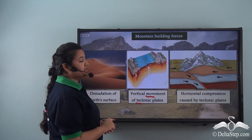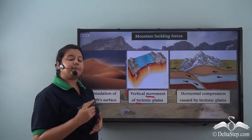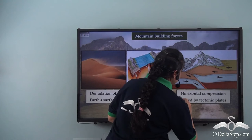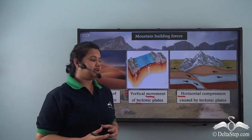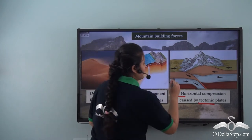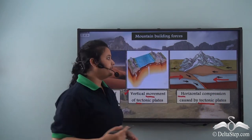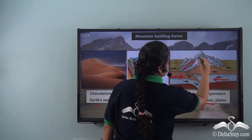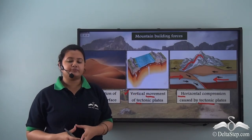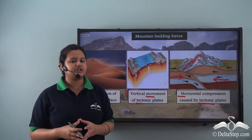The internal forces mainly include movement of tectonic plates. We can find two types of movements: vertical movement — that is subduction or upliftment of tectonic plates — and horizontal compression of the crustal layer due to convergence of tectonic plates. As the tectonic plates converge, the overlying rocks crumble. These processes are caused by endogenic forces.